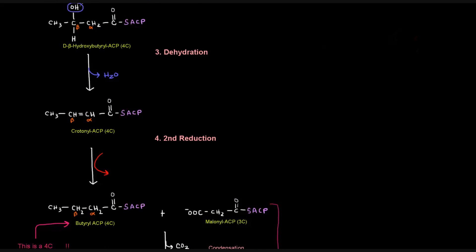In the dehydration step, we lose the OH and one hydrogen as water, producing the enoyl-ACP. This reaction is catalyzed by beta-hydroxyacyl-ACP dehydratase. Dehydratase makes sense — we're losing water. It acts on the beta-hydroxyacyl-ACP, where the beta-carbon has a hydroxy group, to give us the enoyl-ACP.